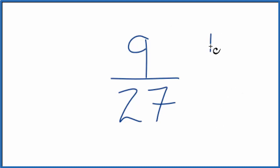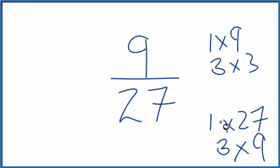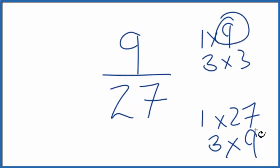If we look at 9, 1 times 9 gives us 9, 3 times 3 gives us 9. For 27, 1 times 27, and then 3 times 9. So it looks like 9 is the largest common factor of 9 and 27, so we'll divide the numerator and the denominator by 9.